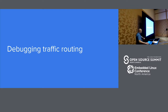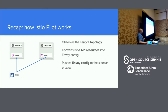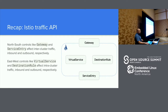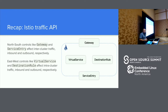Let's talk about debugging traffic routing. Pilot's job is to observe the topology and take Istio API resources — traffic rules, circuit breaking, rate limiting, traffic splitting — and turn them into Envoy config, then push those out to all the proxies. Within the Istio traffic API, there are four main objects: for north-south traffic you have Istio gateway and service entry objects, and for east-west traffic you have virtual service and destination rule.